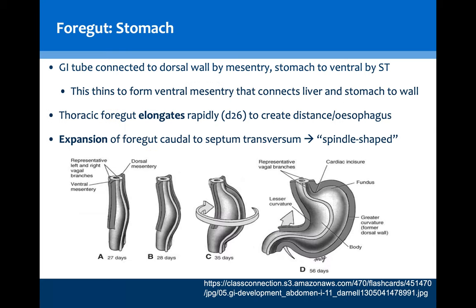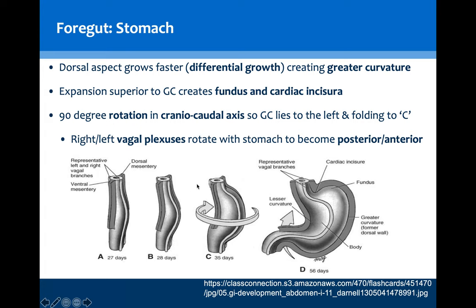Moving more caudally, the formation of the stomach is a key process to understand. The dorsal mesentery is coupled with a ventral mesentery that will thin. The thoracic foregut begins to elongate rapidly to create a distance between the mouth and the presumptive stomach area, forming our esophagus. Expansion of the foregut, caudal to the septum transversum, leads to this spindle-shaped GI tube which will begin to rotate and grow. Differential growth will lead to the formation of the greater curvature, and expansion superior to it creates a fundus and a cardiac incisura.